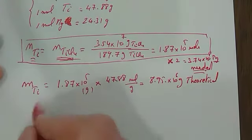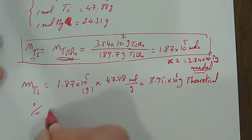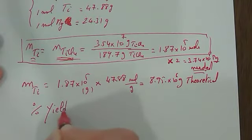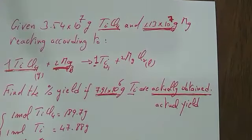To find the percent yield, percent yield equals actual yield divided by theoretical yield. The actual yield is what we actually obtained.